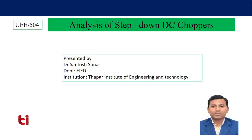Today I will analyze the step-down DC-to-DC converter. Last class I discussed the basic working principle of the step-down converter, where we saw that output voltage equals D times input voltage. By controlling the duty cycle D between 0 and 1 we can reduce the output voltage. We also saw that a pulsating output voltage appears across the load resistance, and we used a second-order filter to make the output voltage usable.